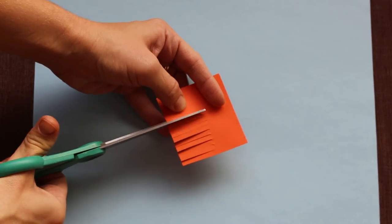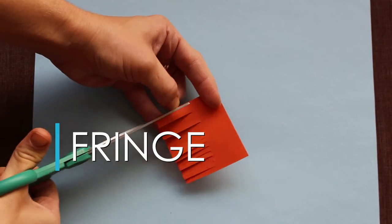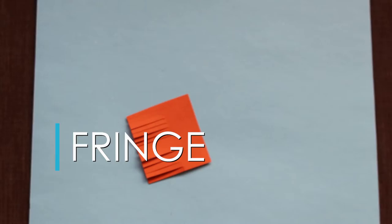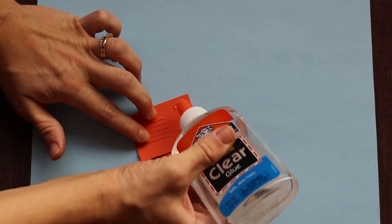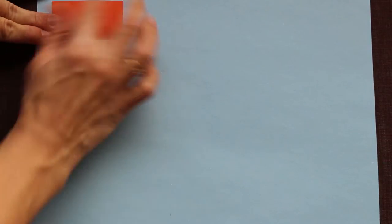Technique one, fringe. Make small cuts that are side by side or parallel to one another. Leave a small space uncut. This is where you will apply dots of glue.